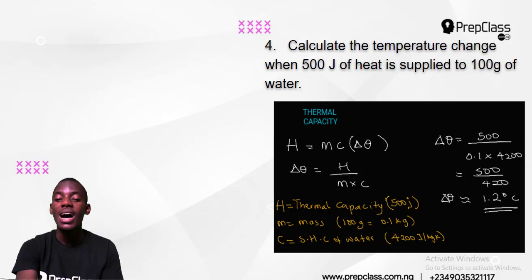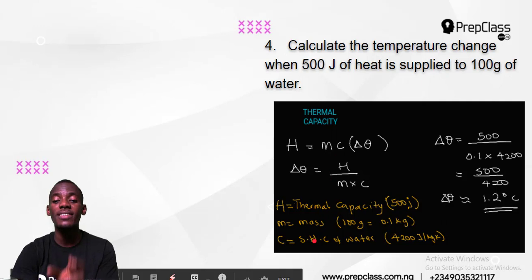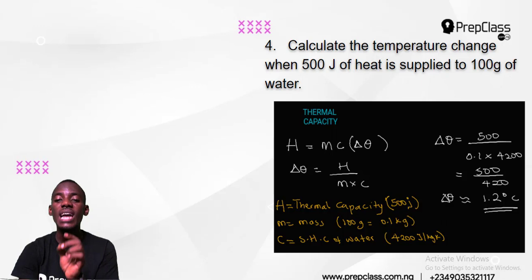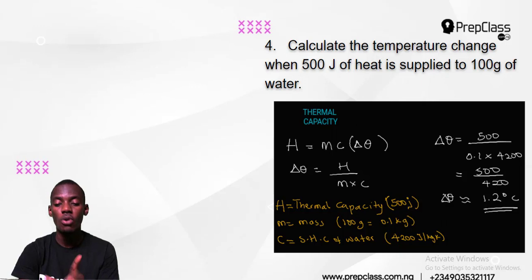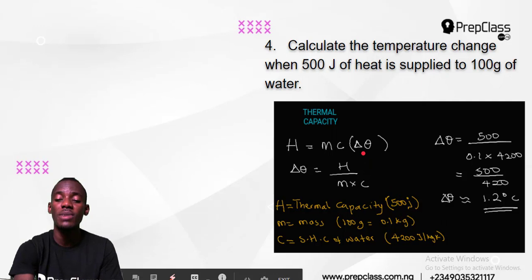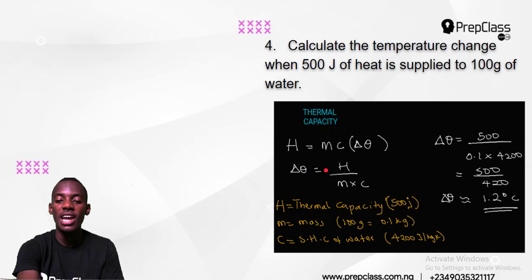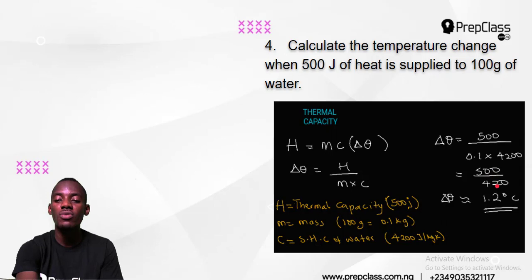C is the specific heat capacity of water. The specific heat capacity of water is always given — it is 4,200 joules per kilogram per Kelvin. Now, make the change in temperature the subject: change in theta equals H over (M times C). So that is 500 over (0.1 times 4,200), which is 500 over 420, giving 1.2 degrees Celsius.